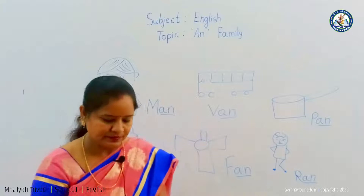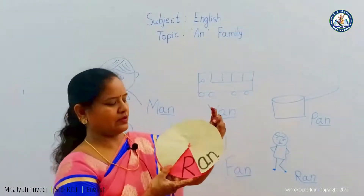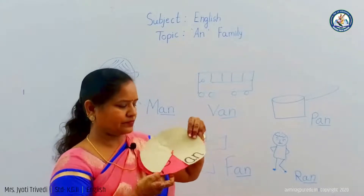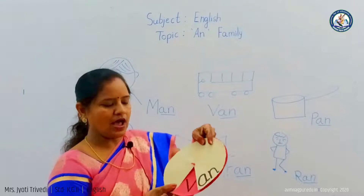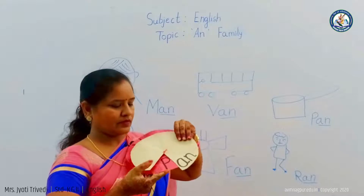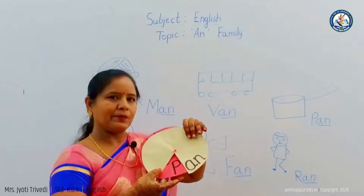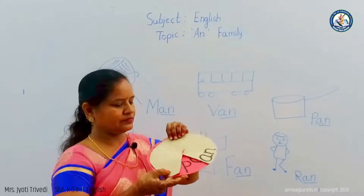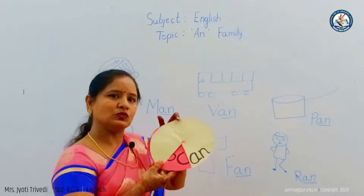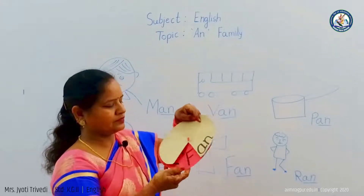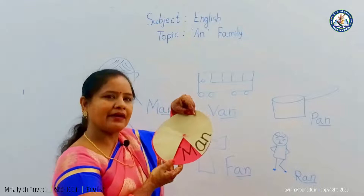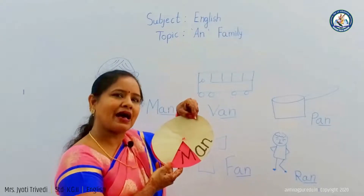See here — this is the flashcard. R-AN: ran, ran means dhodna. V-AN: van, van means gaadi. P-AN: pan, pan means kadhai. C-AN: can, can means dabba. F-AN: fan, fan means pankha. M-AN: man, man means aadmi. Is that clear?